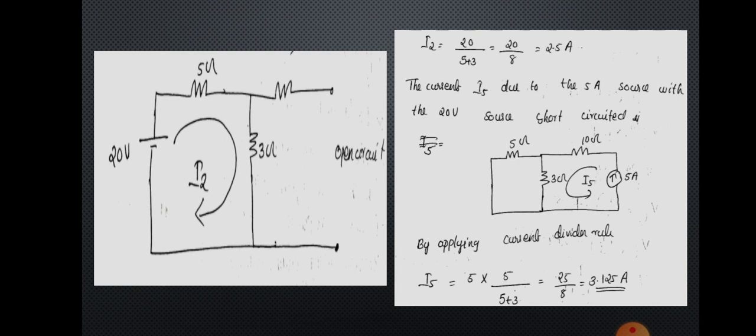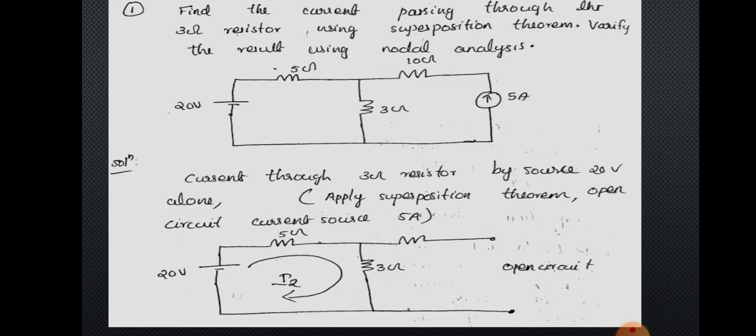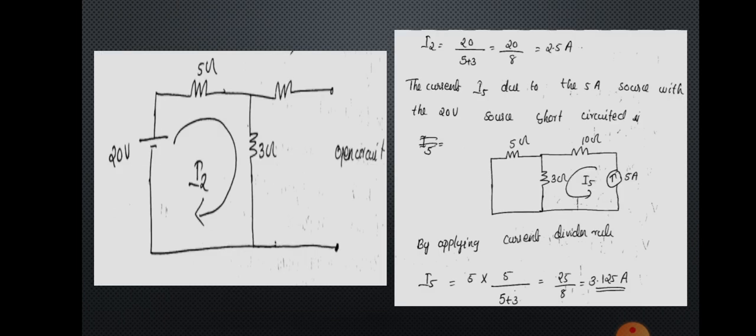That is the first section — considering the effect of only the voltage source. Now we consider the effect of the current source. The 5 ampere source is considered alone, and the 20 volt battery is replaced by a short circuit. The circuit now has 5 ampere connected to 10 ohm, and 3 ohm and 5 ohm connected in parallel, with the voltage source replaced by short circuit per the superposition principle.